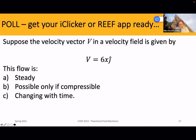Next question: same vector V equals 6X j-hat. Is this flow steady? Is it possible only if it's compressible flow? Or is it changing with time? With the information given, which one is true? The question is: what do we know about its change in time?